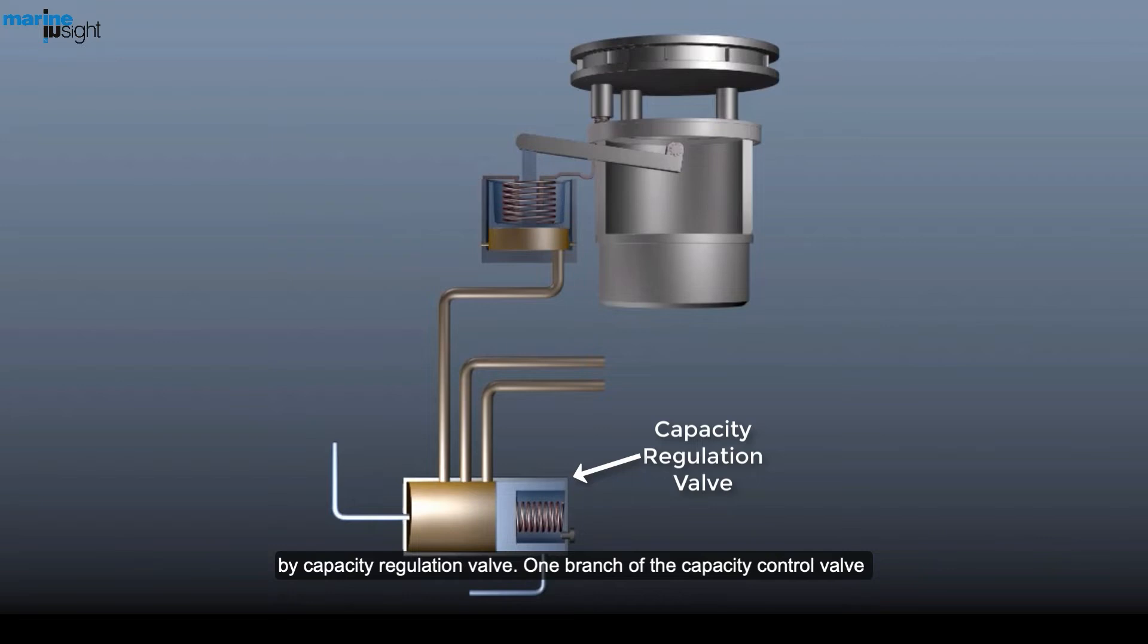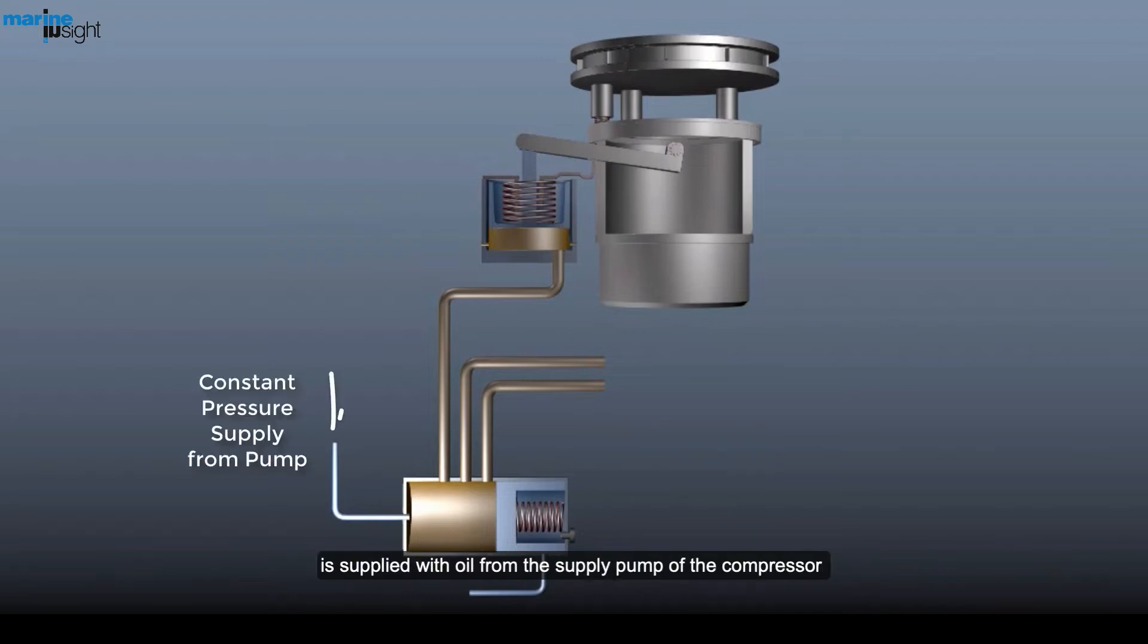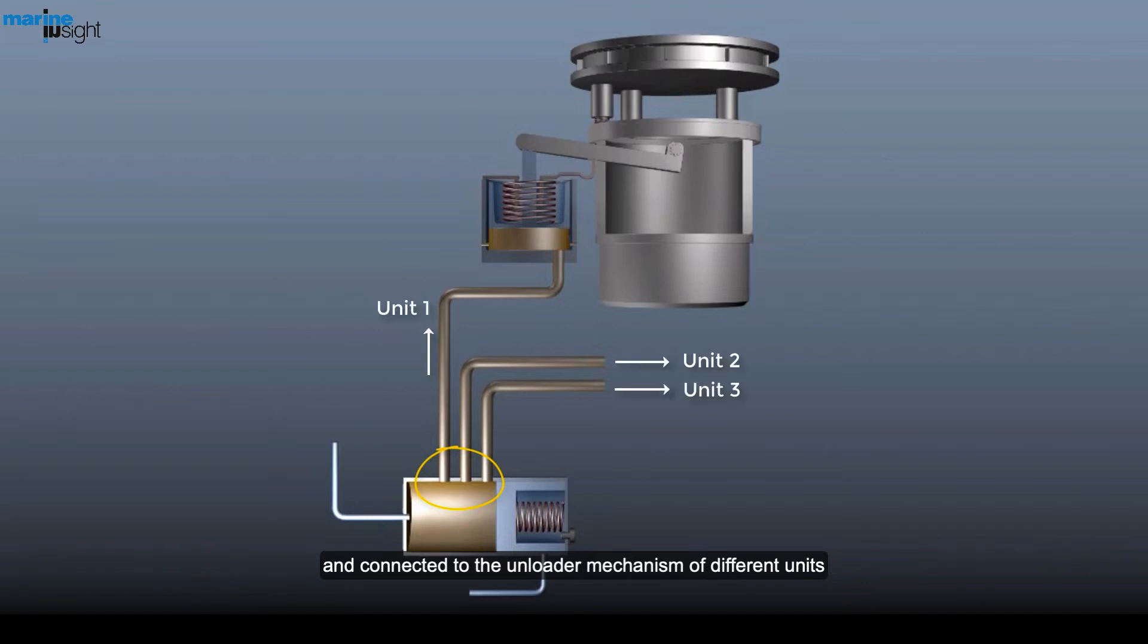One branch of the capacity control valve is supplied with oil from the supply pump of the compressor at constant pressure. This valve has several grooves bored into its periphery and connected to the unloader mechanism of different units.